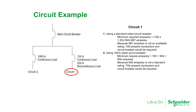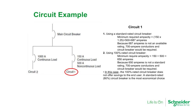When using a 100% rated circuit breaker on circuit number 1, the minimum required ampacity would simply be 150A of continuous load plus 500A of non-continuous load, yielding 650A. Because 650A is not a standard rating either, a 700A conductor and circuit breaker would be required. In this case, the 100% rated circuit breaker does not offer any savings to the end user. A standard rated or 80% rated circuit breaker is the most economical choice.